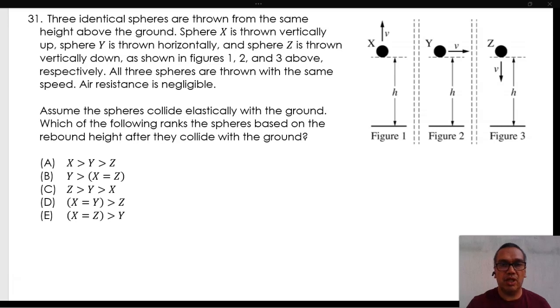Three identical spheres are thrown from the same height above the ground. Sphere X is thrown vertically up, Sphere Y is thrown horizontally, and Sphere Z is thrown vertically down as shown in Figures 1, 2, and 3 above, respectively.